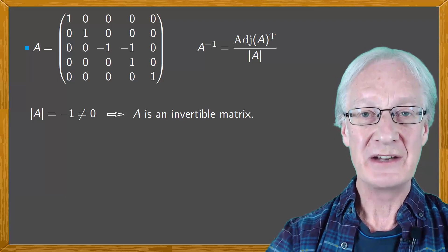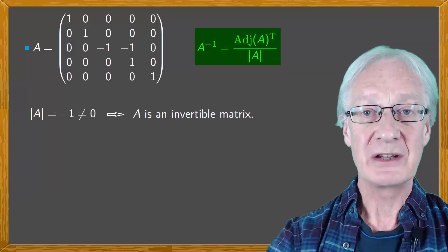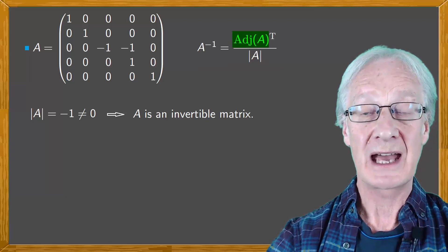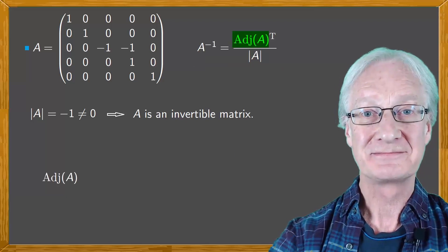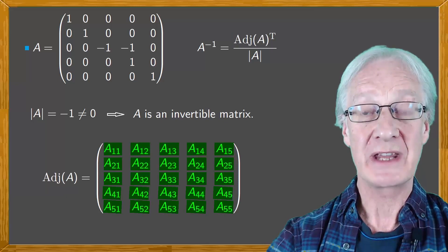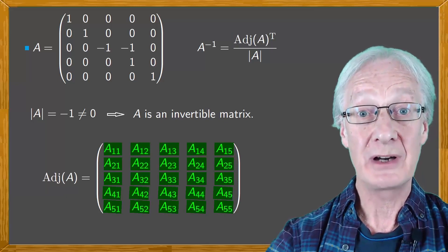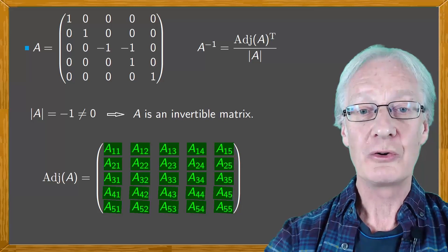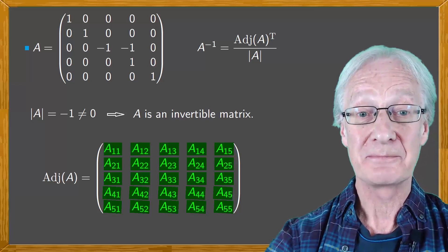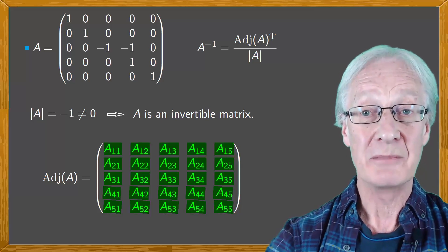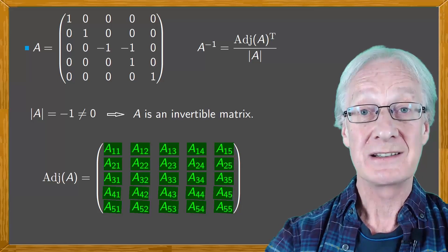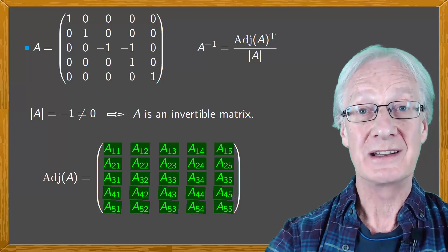If we calculated this inverse matrix by the formula mentioned above, we'd have to calculate the adjoint matrix — that is, the adjoints of each of the elements of the matrix, a total of 25. All the calculations are simple, but there are 25 determinants, and at any point we might make a mistake. Why not try it yourself and tell us your impressions in the comments below.